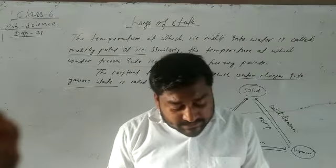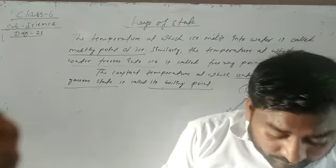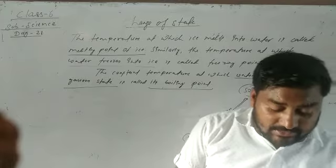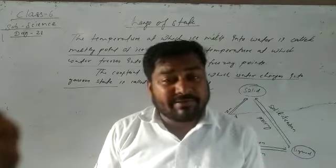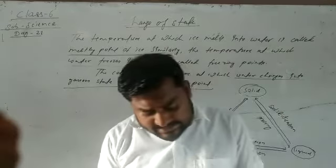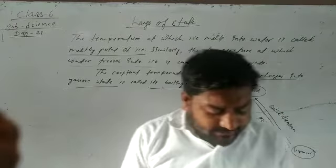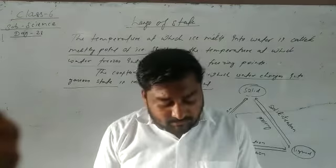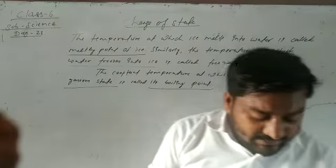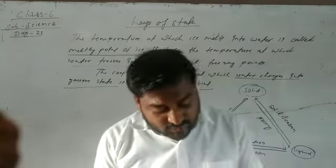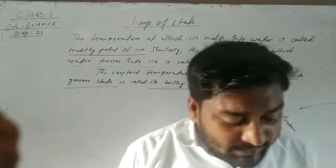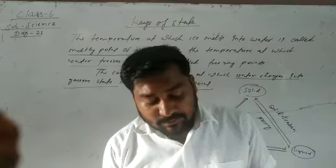Sometimes substances like naphthalene, camphor, and iodine directly change into gas on heating and directly back into solid on cooling. Such solids are called volatile solids. The process by which a solid substance directly changes into vapor on heating and converts back to solid on cooling is called sublimation.